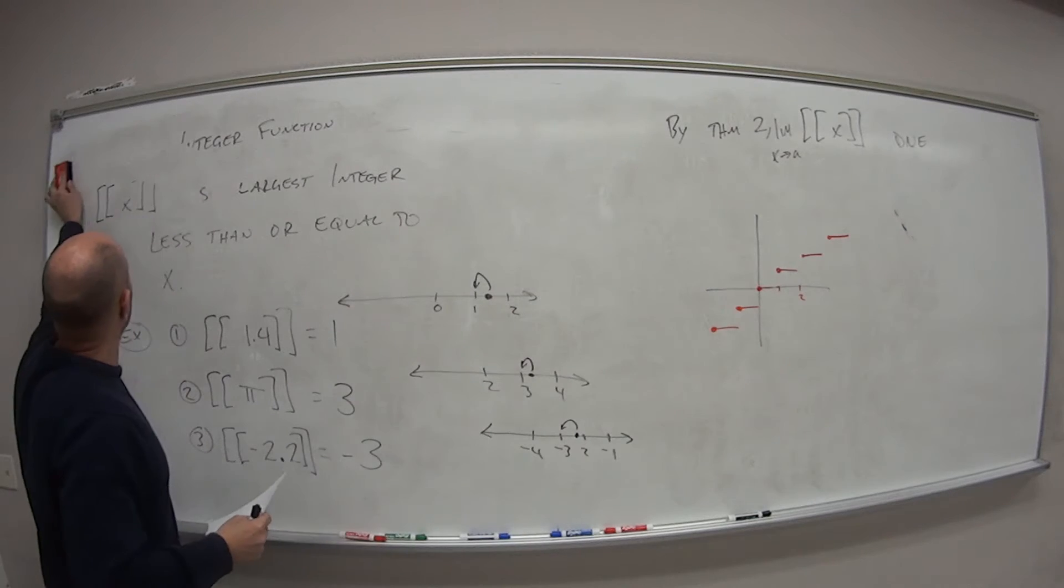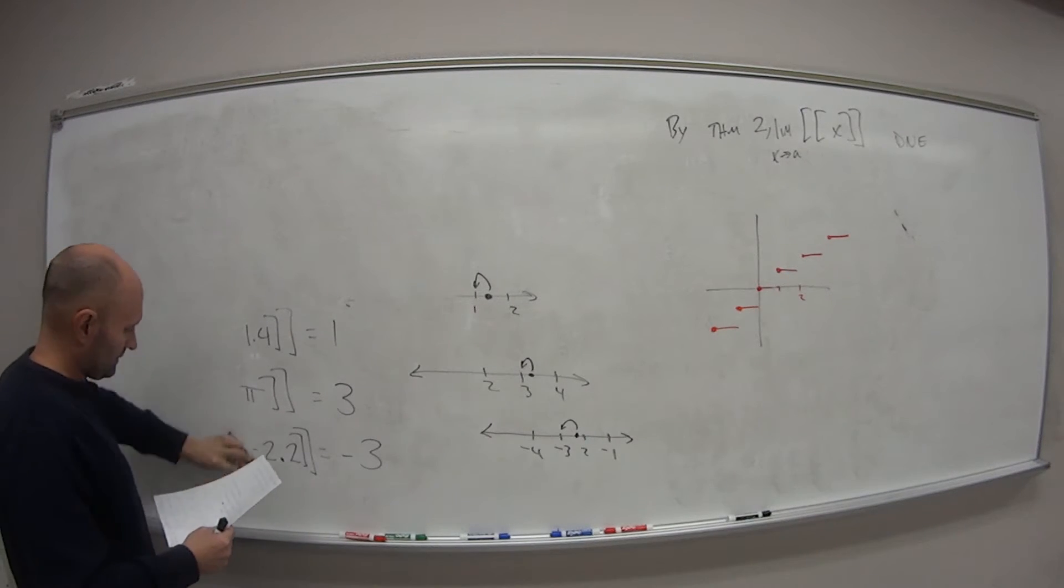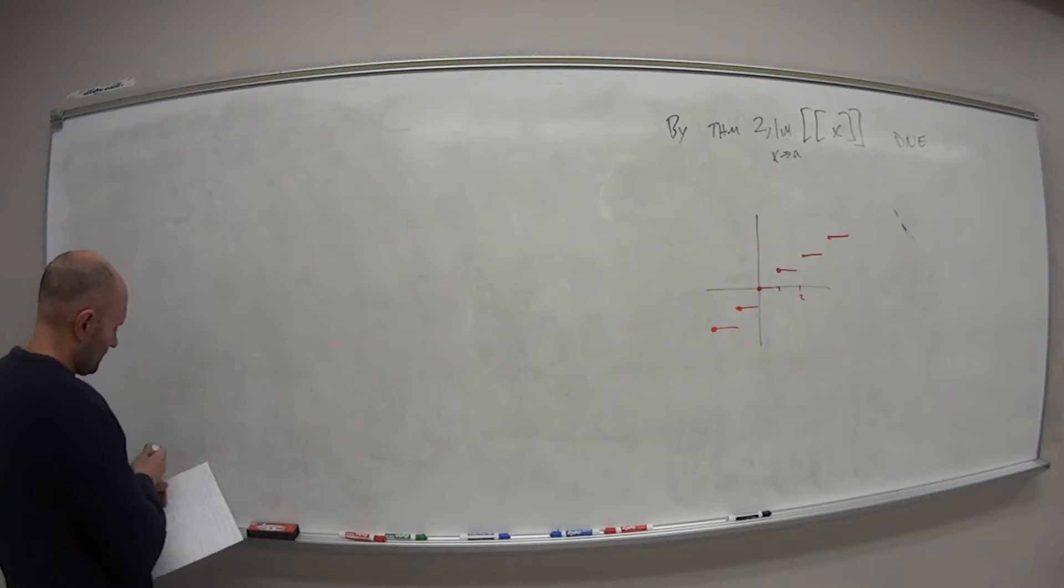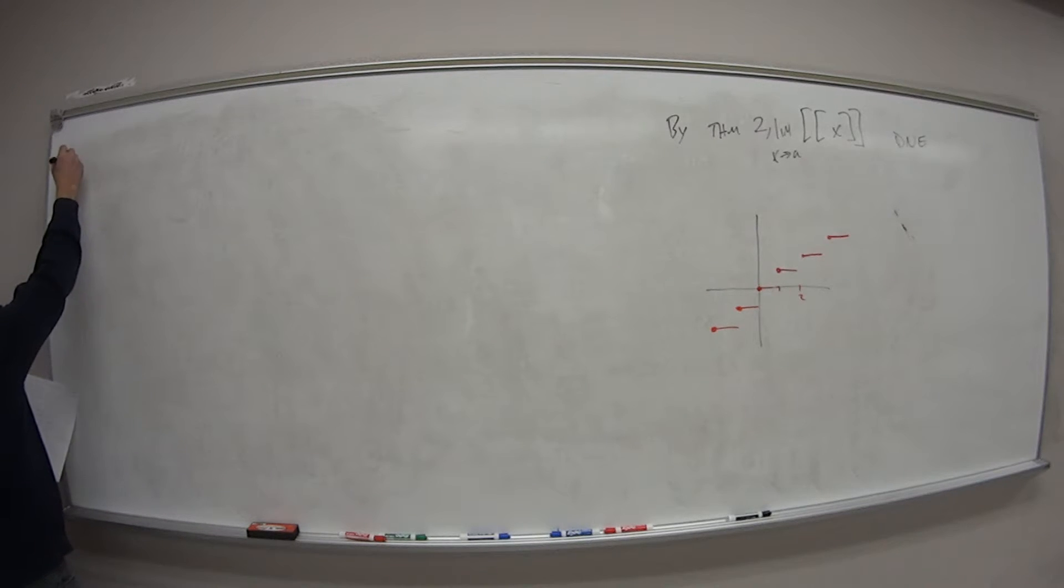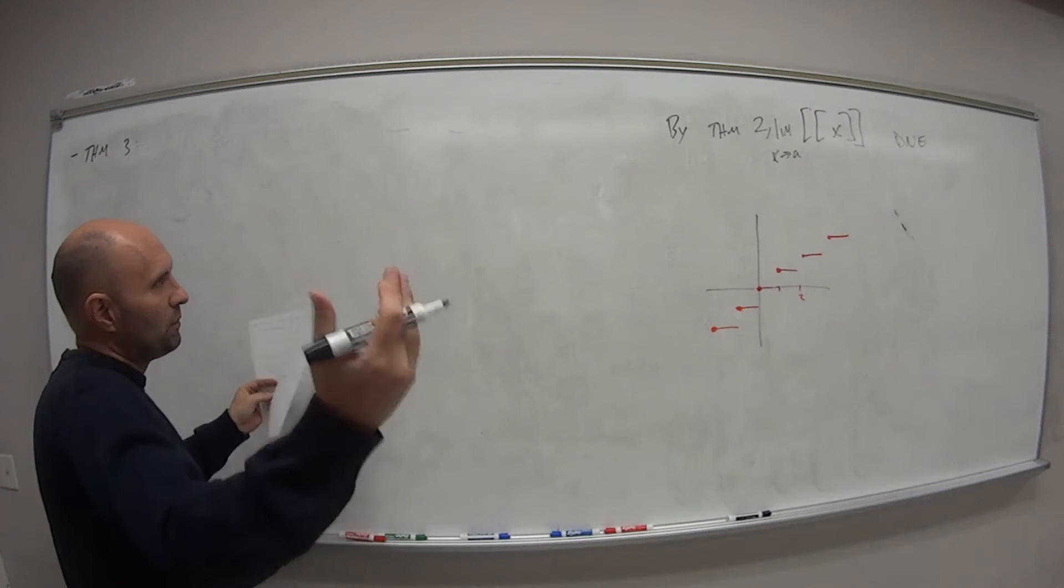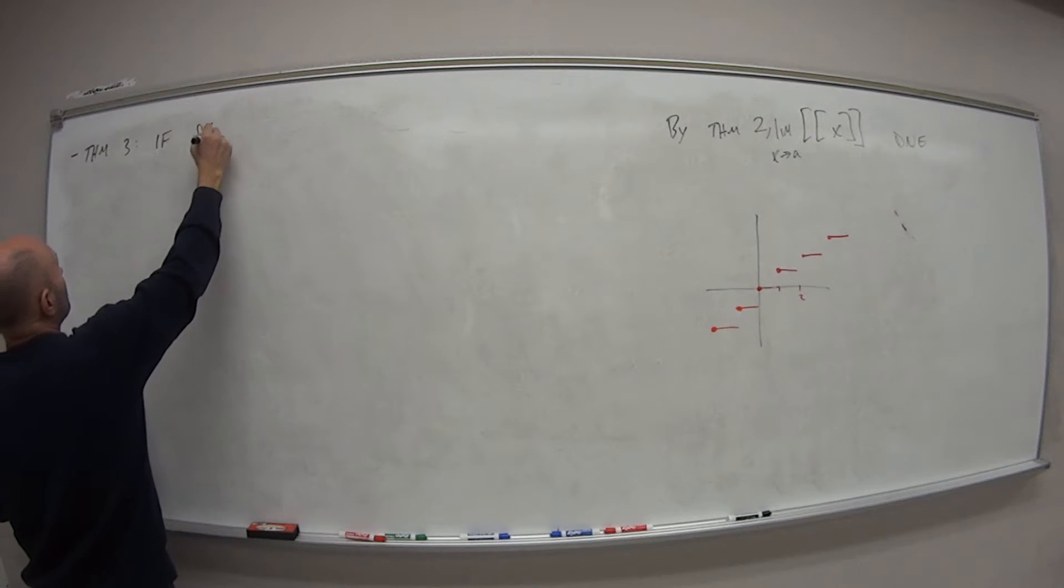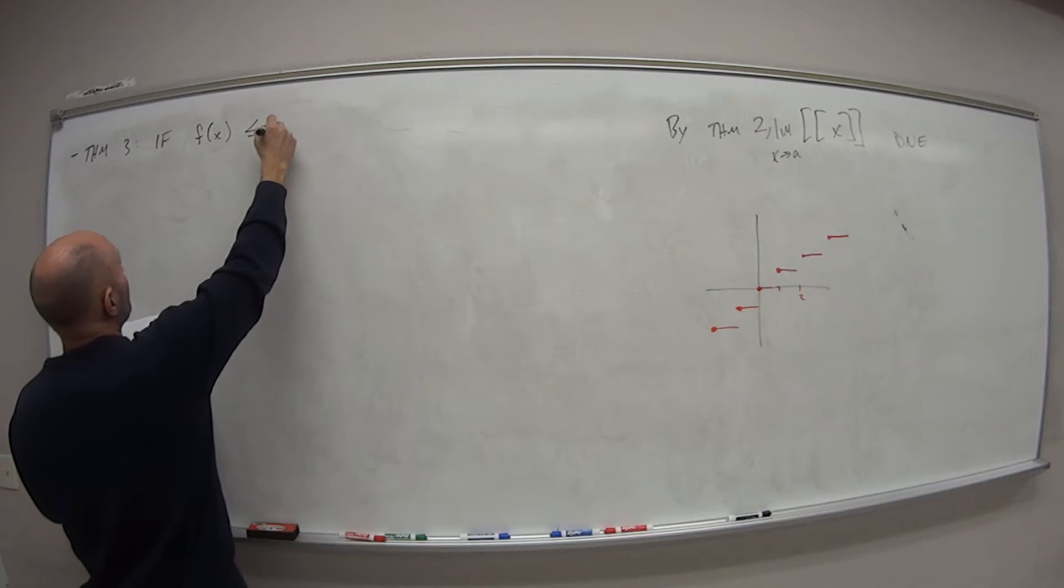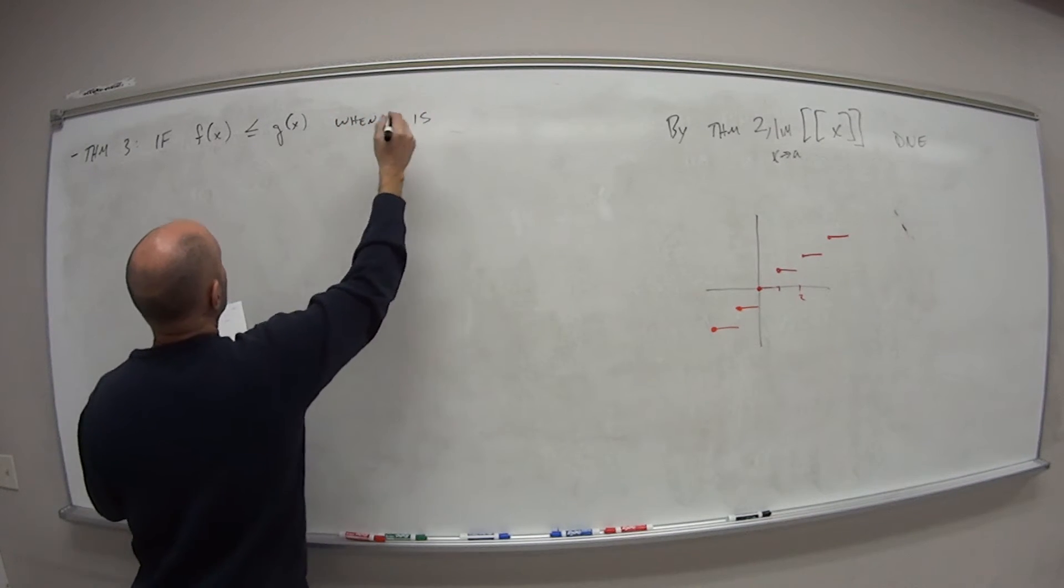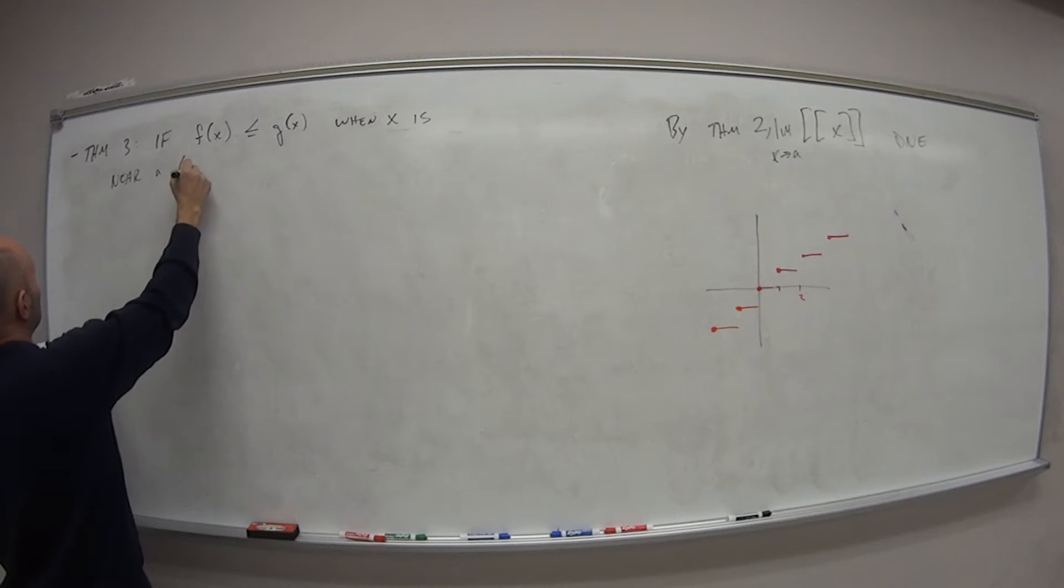Let me give you another theorem. I'll call this one theorem 3. So for now or for future reference, that's this guy here. So I used THM shorthand for theorem. Again, math people, we're lazy, so we don't actually want to write the whole word. But it has the following. If F of X is less than or equal to G of X when X is near A, except possibly at A.